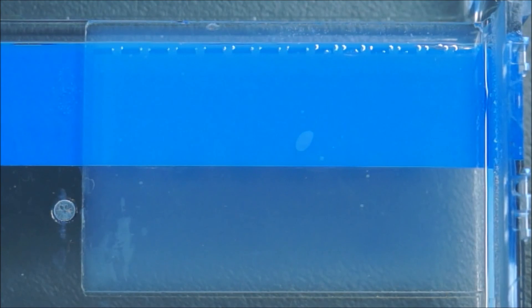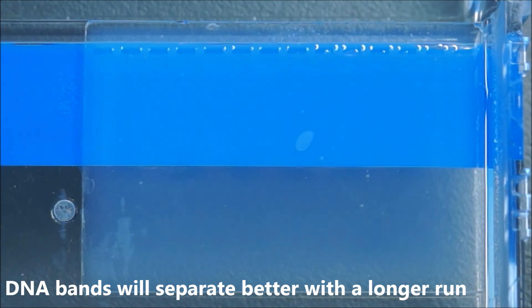Once the blue dye has run off the edge or it's just about to run off the edge, you can turn off the machine and take your gel for staining.